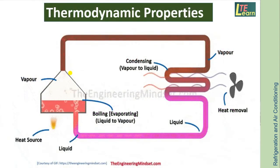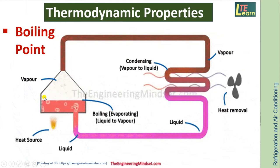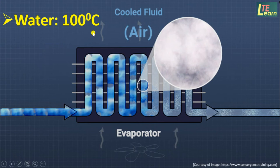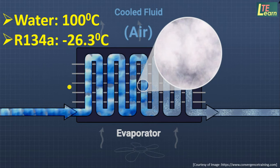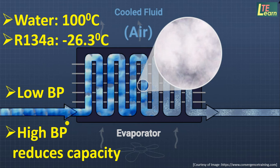Thermodynamic Properties of refrigerant include Boiling Point — the temperature at which liquid refrigerant at the evaporator is converted into vapor by absorbing heat from the space to be cooled. As the boiling point of water is 100°C, it cannot pick heat from the space to be cooled. Hence, refrigerant R134A having a boiling point of -26.3°C is used in a domestic refrigerator. Boiling point of refrigerant should be low, as a high boiling point reduces the capacity of the system.